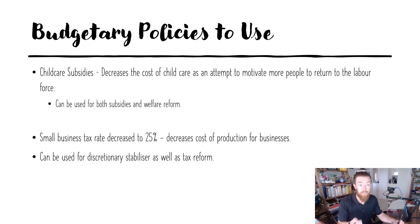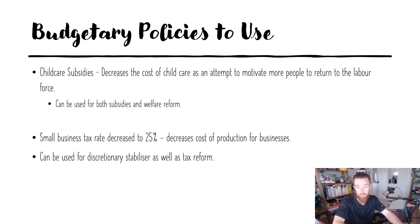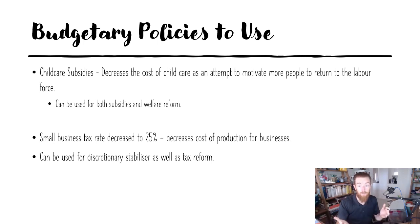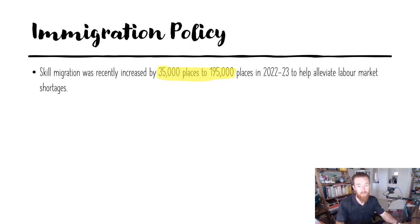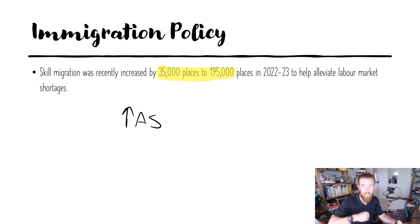Some more budgetary policies: childcare subsidies — there have been recent increases to childcare subsidies and access to them, decreasing the cost of childcare to motivate people to return to the labor force. It can be used as both subsidies and welfare reform, so you can double down on it in aggregate supply side policies. The small business tax rate has also decreased to 25%, which decreases the cost of production for businesses — usable as either a discretionary stabilizer or a tax reform. Additionally, skilled migration was recently increased by 35,000 places up to 195,000 places in 2022-2023, to alleviate labor market shortages and increase aggregate supply overall.